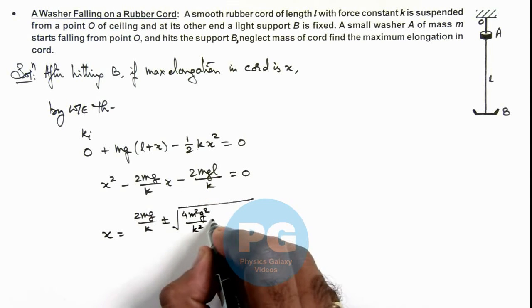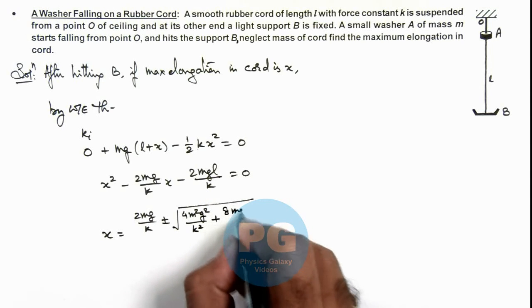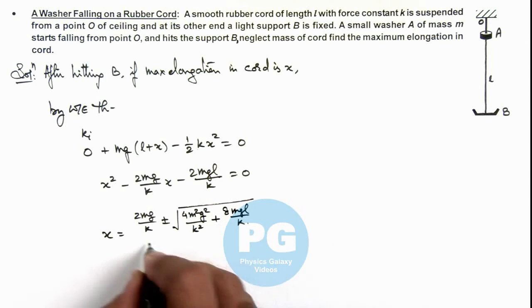Plus 4ac, here we can write 8mgl/k, divided by 2.